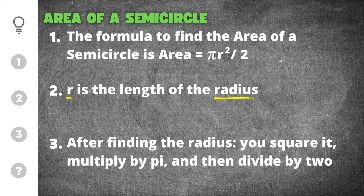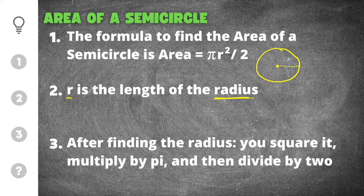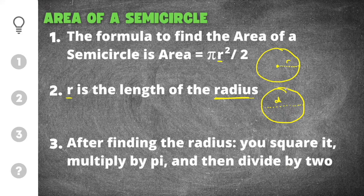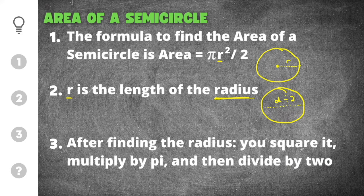The radius of a circle is the distance from the center of that circle out to the outer edge. If you're given a problem where the line runs the entire length of the circle, that is known as the diameter. If they give you the diameter, you have to convert it to radius by dividing the diameter by two, because the diameter is twice the length of the radius.